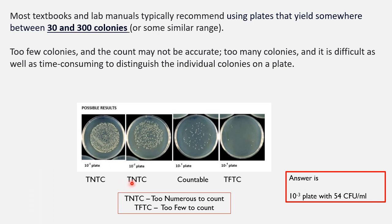That is why we report the 10^-1 and 10^-2 dilution plates as TNTC, and the 10^-4 plate as TFTC — Too Few To Count, with hardly around 5 colonies visible. The 10^-3 plate, however, falls within the 30 to 300 colony range. This is the countable plate — all colonies are well isolated, I can distinguish and count them properly, with around 50 to 54 CFU. So the 10^-3 plate is the one I will select for my further calculations.